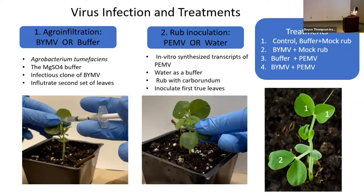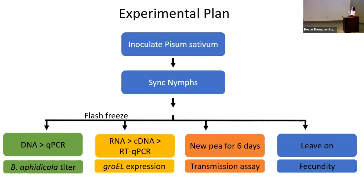Our treatments included a double mock control — just the agrobacterium buffer and water with carborundum — single treatments of BYMV and PMV, and a co-infection treatment. One important note: after 14 days, we were able to see symptoms in plants with PMV but not BYMV, as our primers were not quite working. We assumed that co-infected plants had at least PMV and possibly BYMV.